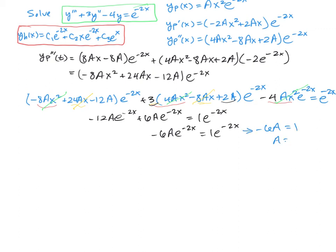So a equals negative 1/6. That is the undetermined coefficient we found to build our particular solution.